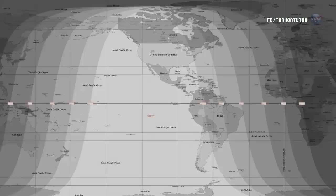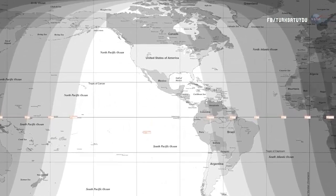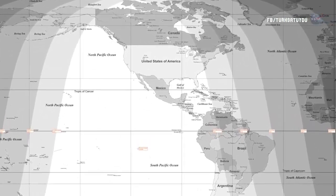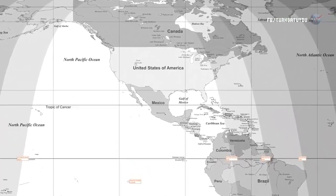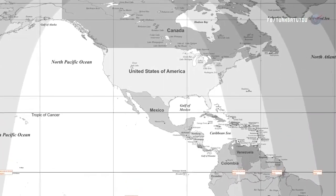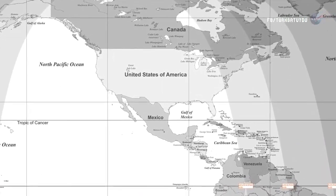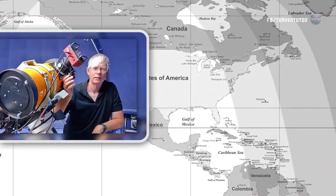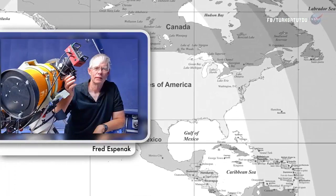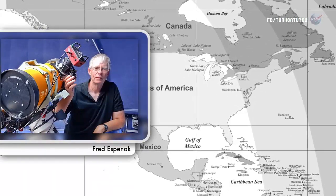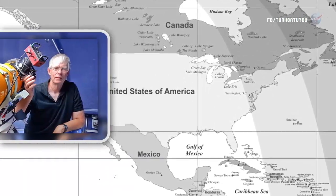The most unique thing about the 2014-2015 tetrad is that all of them are visible for all or parts of the USA, says long-time NASA eclipse expert Fred Espinak.